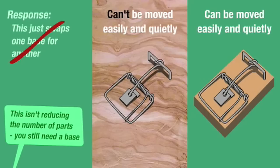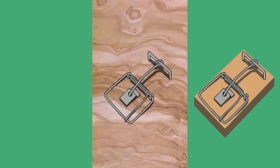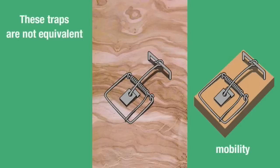But it was claimed this isn't reducing the number of parts, you still need a base. This merely restates Behe's objection without addressing my answer. The standard trap has an important quality not present in the fixed trap: mobility. In order to move the fixed trap you have to dismantle it and reconstruct it elsewhere. With the standard trap no such procedure is needed, so these traps are not equivalent.